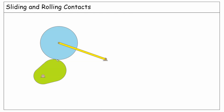Let's introduce the contact between two rigid bodies, body number 1 and body number 2. There is a contact point here. Let's call this point of body number 1 P1 and that for body number 2 P2. We consider a normal direction which passes through the contact point and is perpendicular to both surfaces. The contact constraint says that along the normal direction, the velocities of the points P1 and P2 should be the same — the velocity of P1 in the normal direction equals the velocity of P2 in the normal direction.